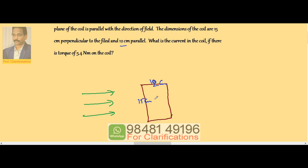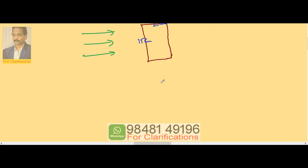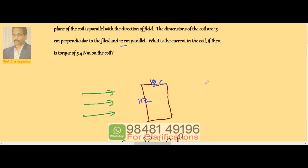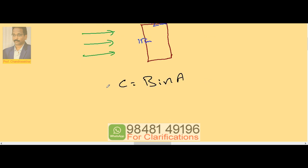Now when the plane of the coil is parallel to the field direction, we know that the torque or couple is given by B I N A cos theta. Theta is 0 degrees. Now data suggests the torque is 5.4.